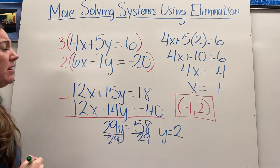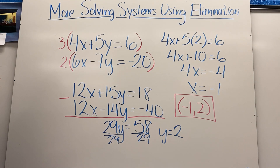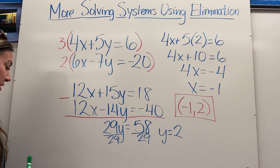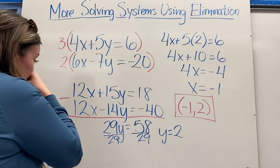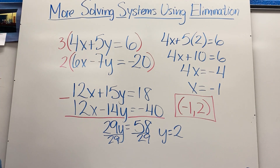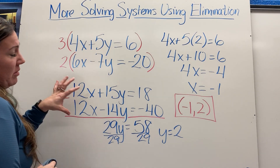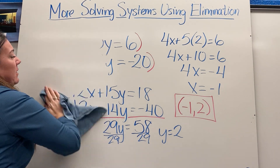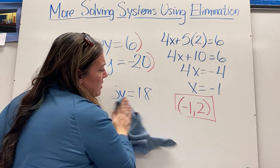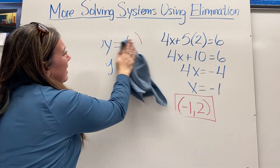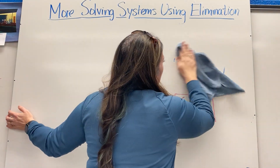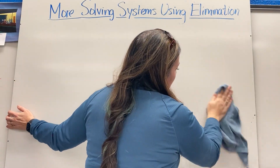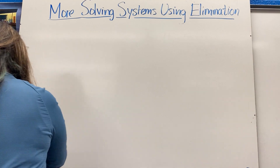Sometimes systems are set up nicely, other times we multiply one equation, and in some cases we must multiply both to get matching or opposite coefficients. You can't talk about elimination without covering some story problems, so let's look at one.